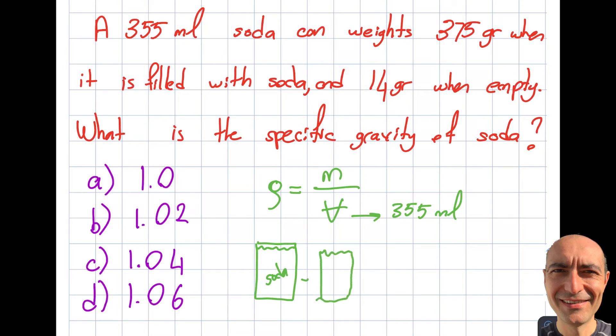In order to obtain the soda weight, I need to subtract the weight of the can. If you think about it, can and soda, this is given to me as 375 grams, and the soda can is given to me as 14 grams. Basically from here I can punch into my calculator and I'm gonna get 361 grams is the weight of the soda.